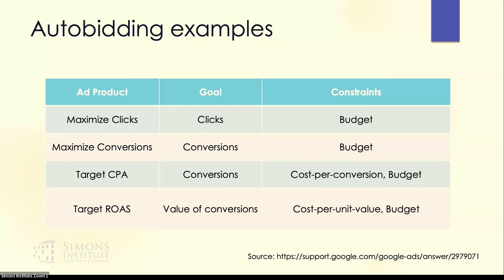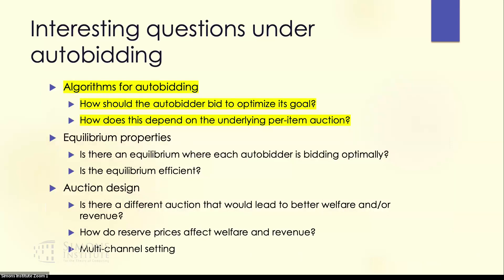Here are some examples from Google. Auto-bidding has given rise to several new research directions, and I'll talk about some of them in this talk. Many of these questions are still open and are an active area of investigation, so I'll touch upon the new things we are thinking about these days.